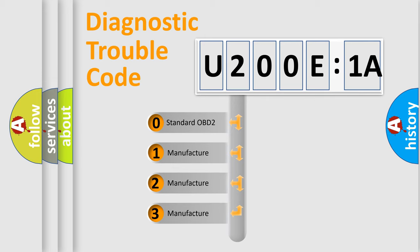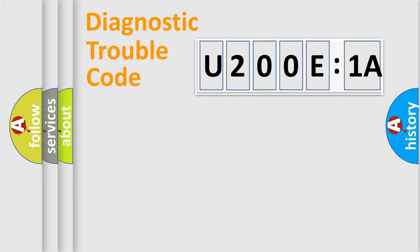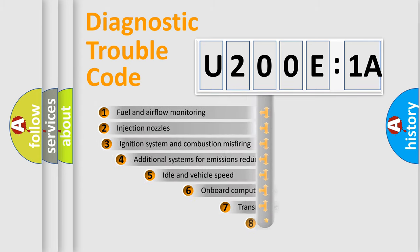If the second character is expressed as zero, it is a standardized error. In the case of numbers 1, 2, 3, it is a manufacturer-specific expression of the car-specific error.